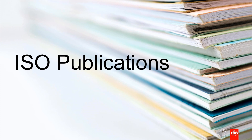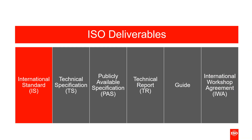ISO produces several different types of publications, also referred to as deliverables. This eLearning module explains the differences between these available deliverables and how a committee can choose the appropriate one for their content. Today we will focus mainly on international standards, technical specifications, publicly available specifications, and technical reports. We will also talk briefly about guides and international workshop agreements.